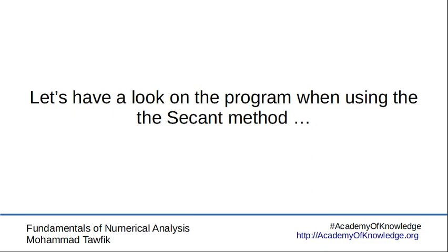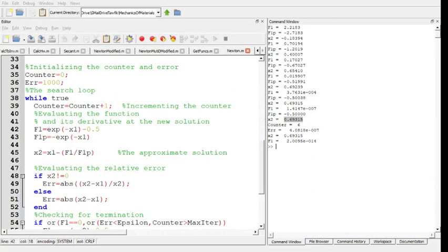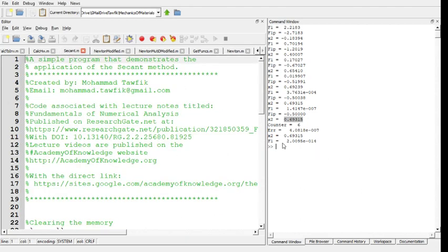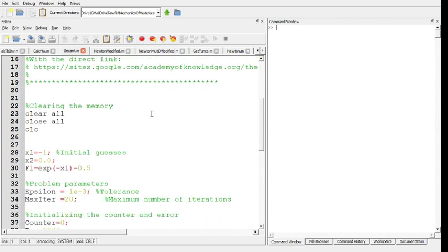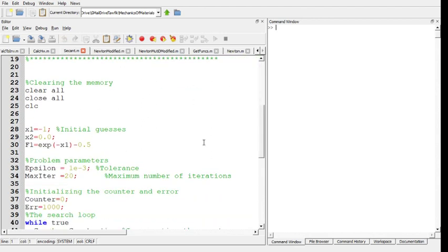So now let's see how the program for the secant method may work. Let's get back to Octave and see the secant method. Here you are. Let's clear the console.